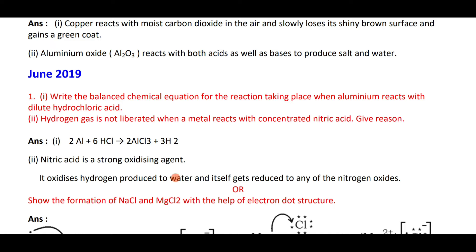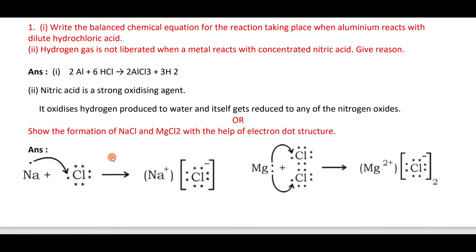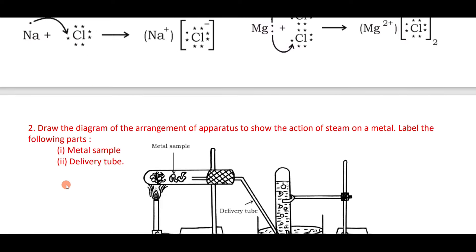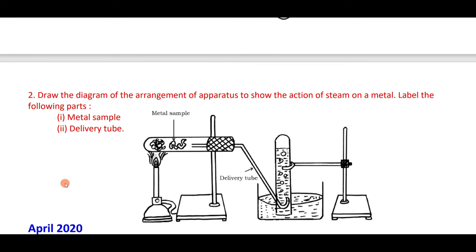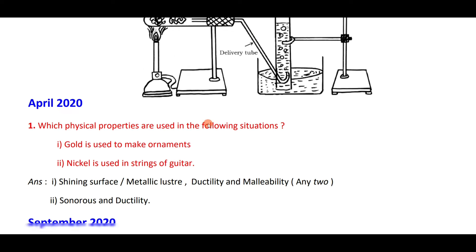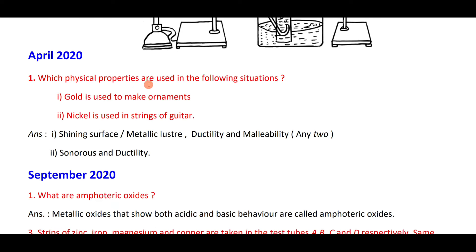The formation of NaCl and MgCl₂ using electron dot structure is very important — a separate video will explain this in detail. Also important: draw the diagram of the arrangement of apparatus to show the action of steam on metal with labeled parts — this is a 3-mark diagram.